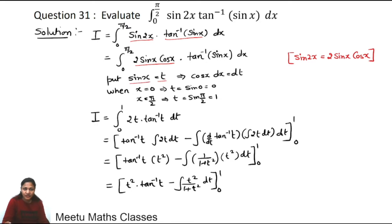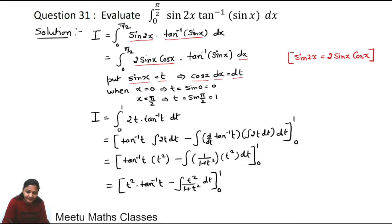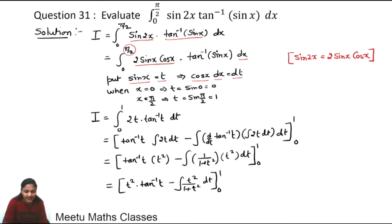Whenever you apply substitution, you need to change the integrand, dx, and the limits in x. So to change dx, take the derivative: the derivative of sinx is cosx·dx, and the derivative of t is dt. So cosx·dx can be replaced by dt. We also change our limits: when x = 0, t = sin0 = 0; and when x = π/2, t = sin(π/2) = 1.